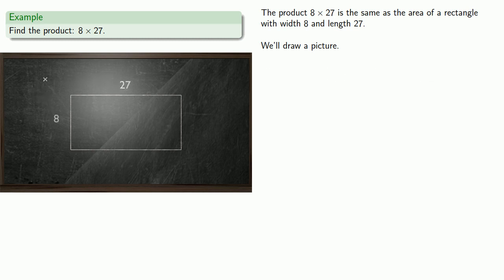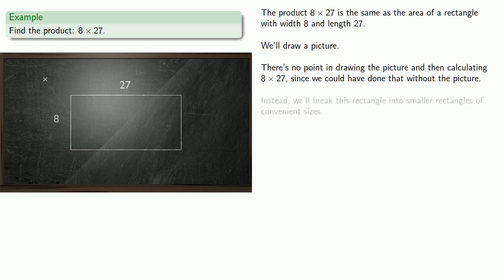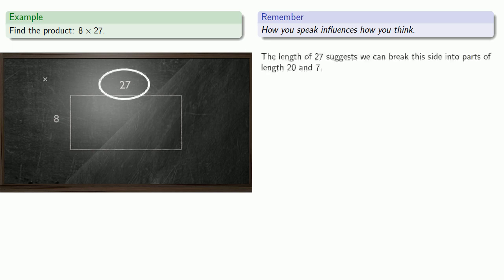Now, there's no point in drawing the picture and then calculating 8 times 27, since we could have done that without the picture. The reason the area model is useful is we can break the rectangle into smaller rectangles of convenient sizes. And here, a useful thing to remember is that how you speak influences how you think. The length of 27 suggests that we can break this side into parts of length 20 and 7.